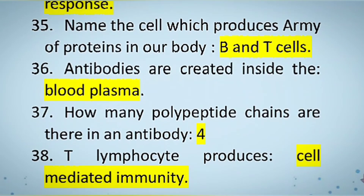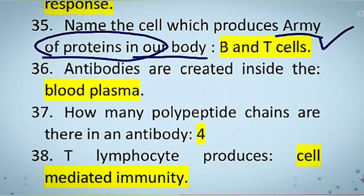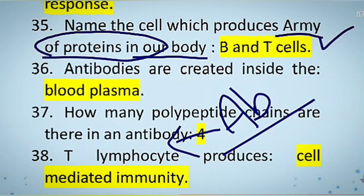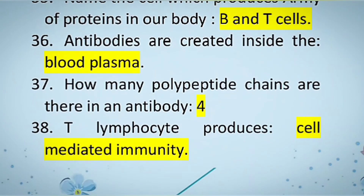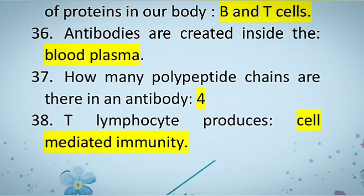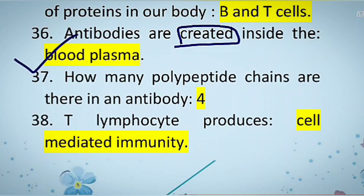The next question: name the cells which produce an army of proteins in our body. Those cells are B cells, which produce antibodies — the army of proteins. These are released from blood plasma.